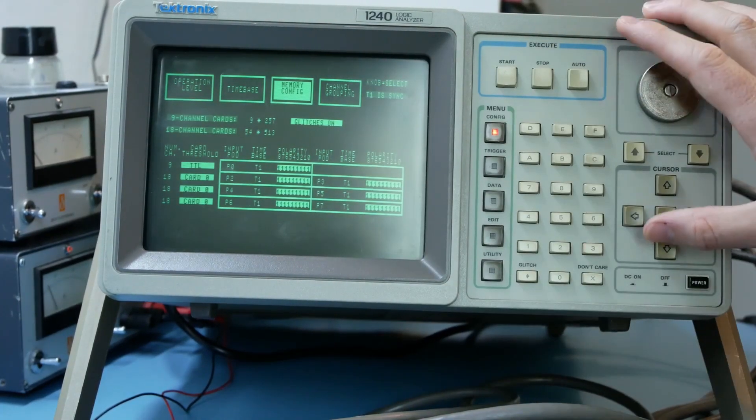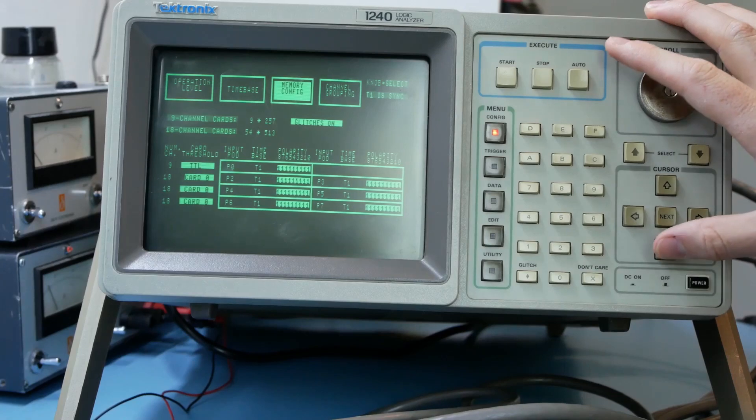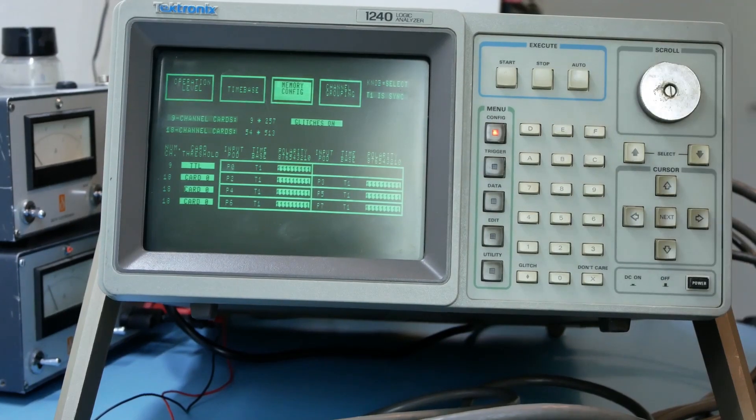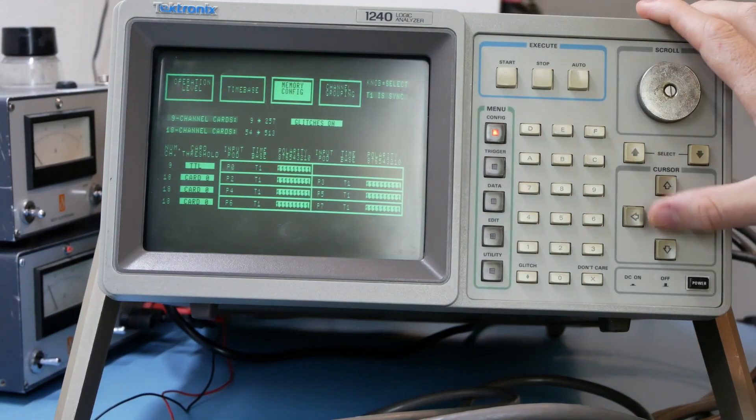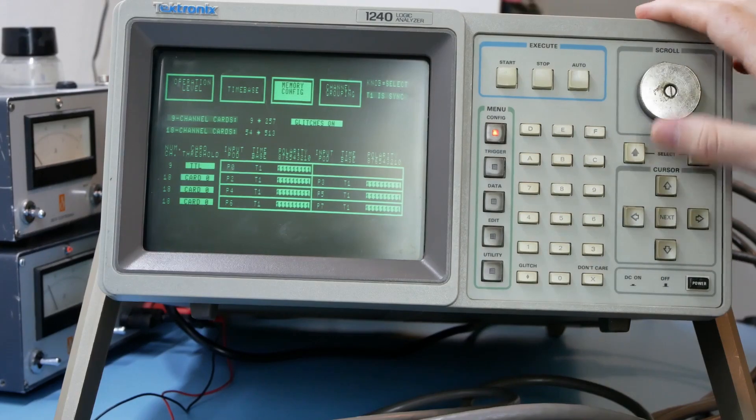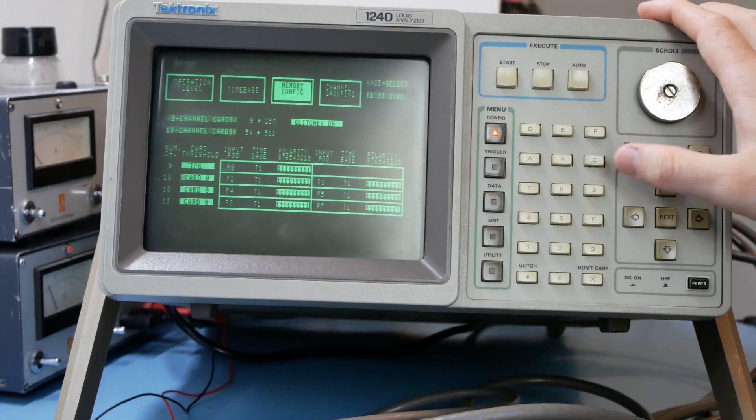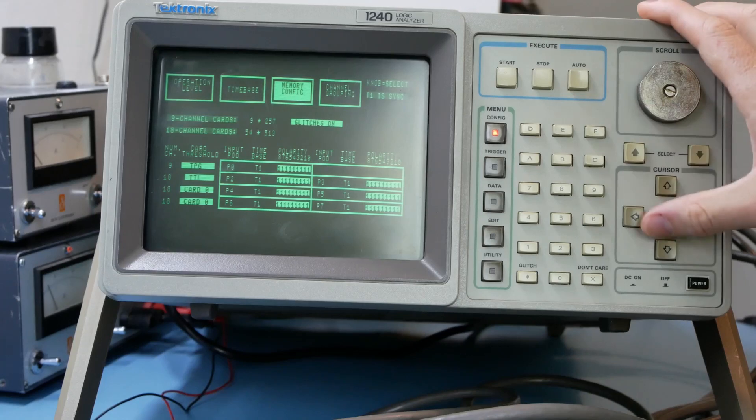In the memory config you set up what cards you are using, the voltage level used, and the sample memory settings. For example TTL voltage level for TTL logic. Let's set up the probe pods that I got plugged in real quick.